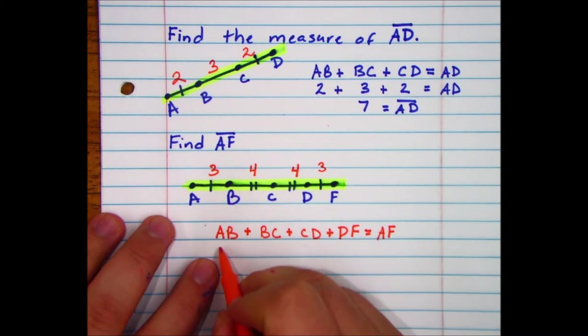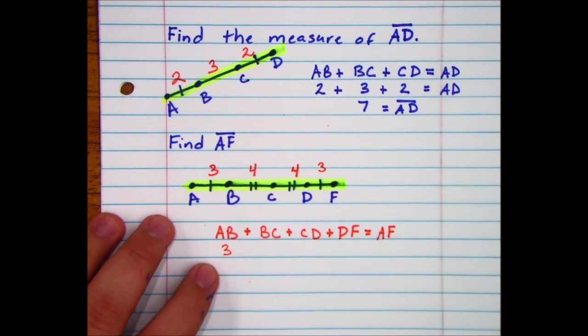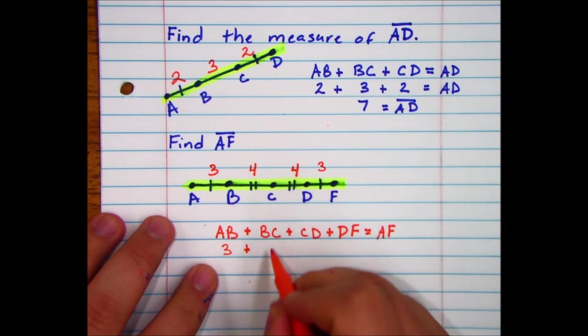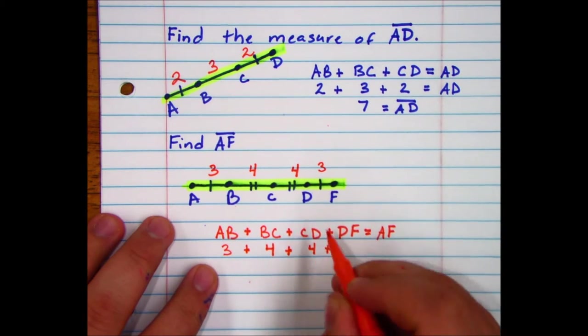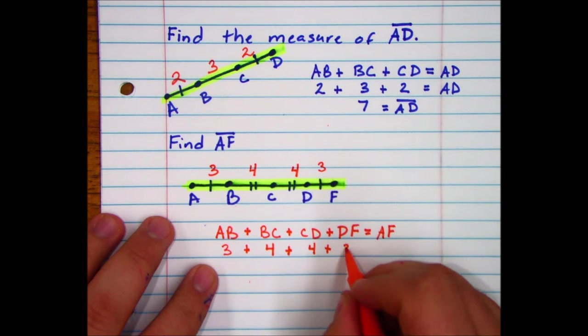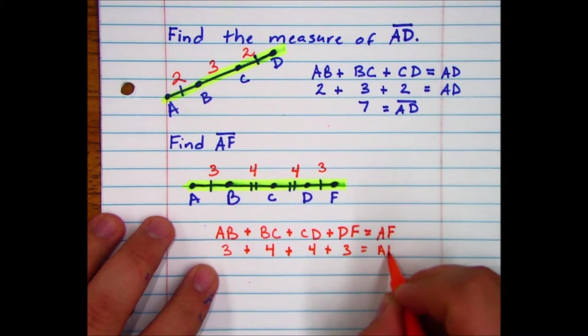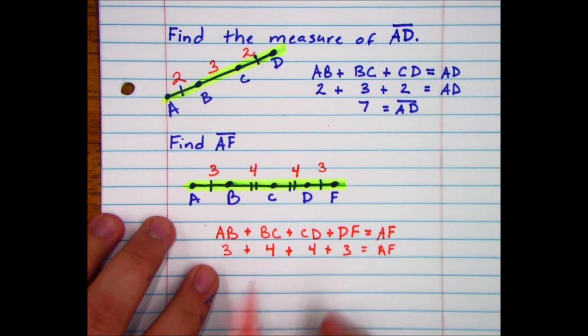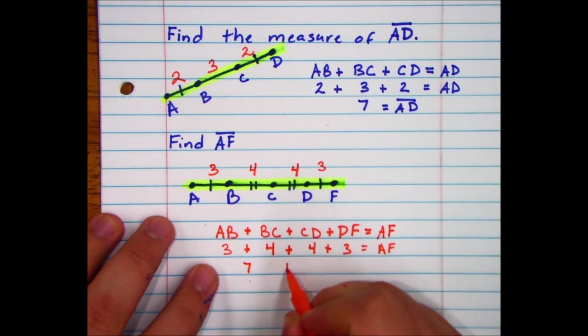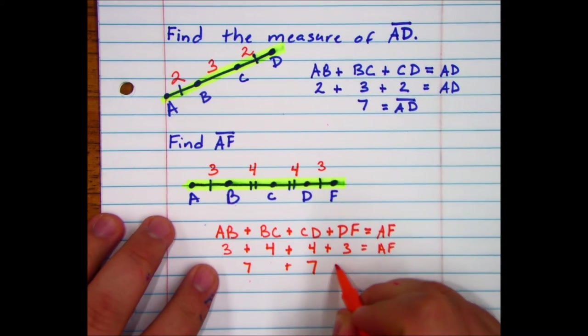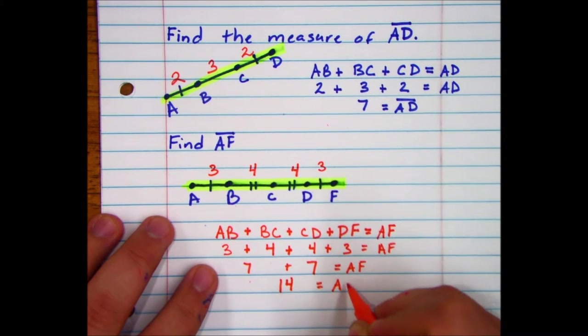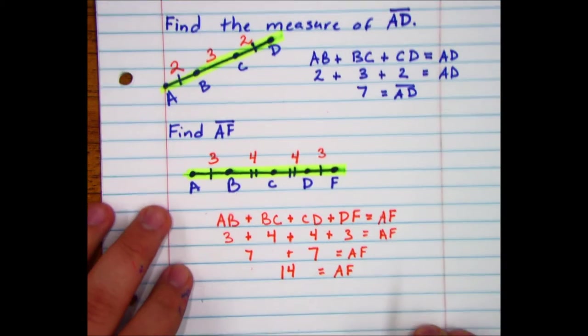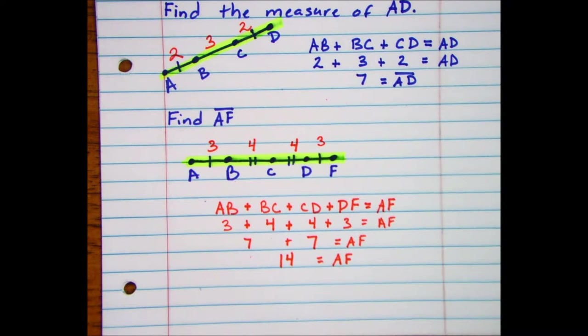Now let's plug into our little formula. AB is 3, plus BC which is 4, plus CD which is 4, plus DF which is 3. 3 plus 4 is 7, 4 plus 3 is 7, 7 plus 7 is 14. So AF equals 14.